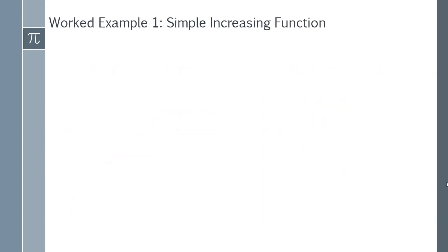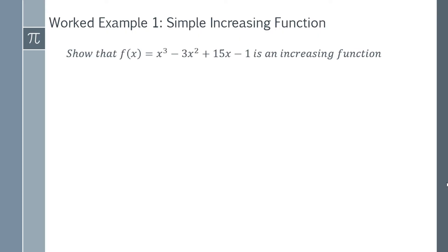Let's look at two work examples. For our first work example, we're going to look at a simple increasing function. The question asks: show that f(x) is an increasing function. What we need to do is prove that for every single value of x the function is increasing. The first step is to simply find the derivative. The three comes to the front, subtract one, we get the 3x² term, then three multiplied by two gives us the minus 6x term, and we drop the x leaving plus 15, with the derivative of the constant being zero. So we get our f'(x).